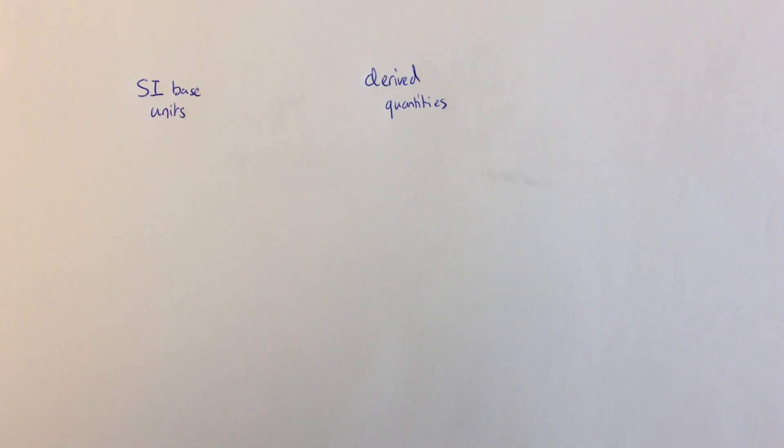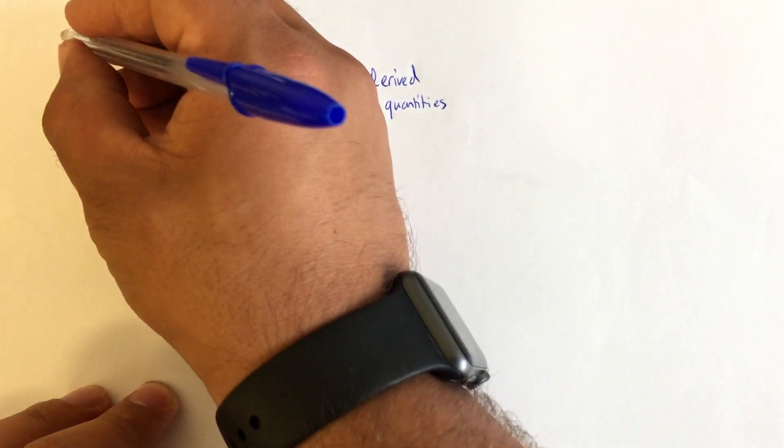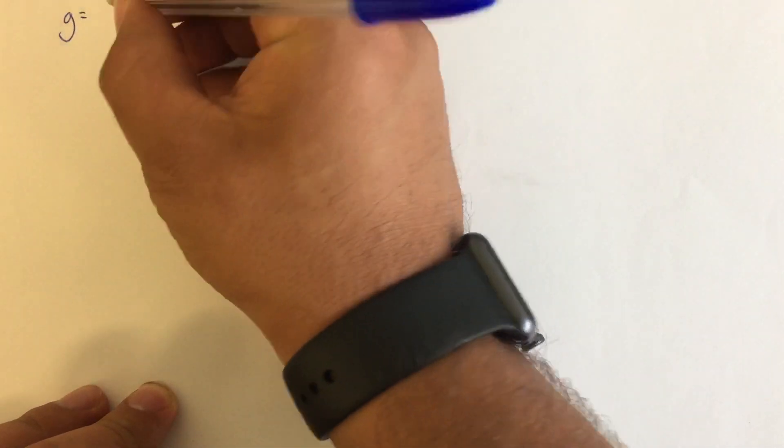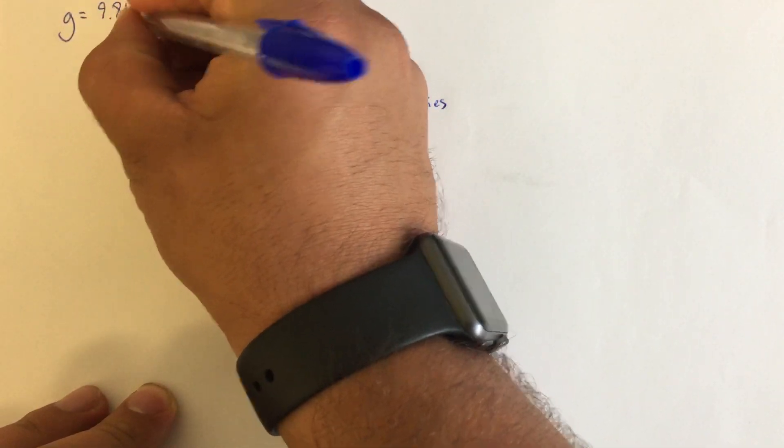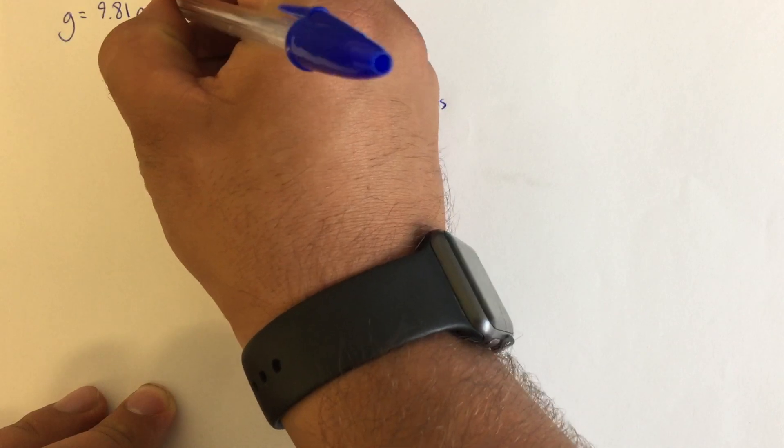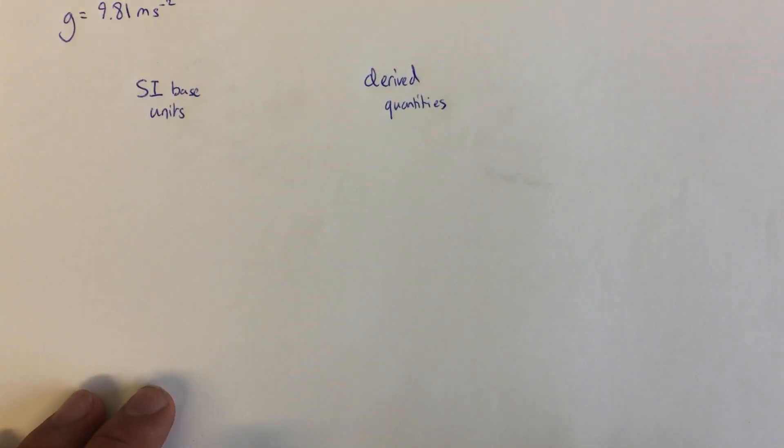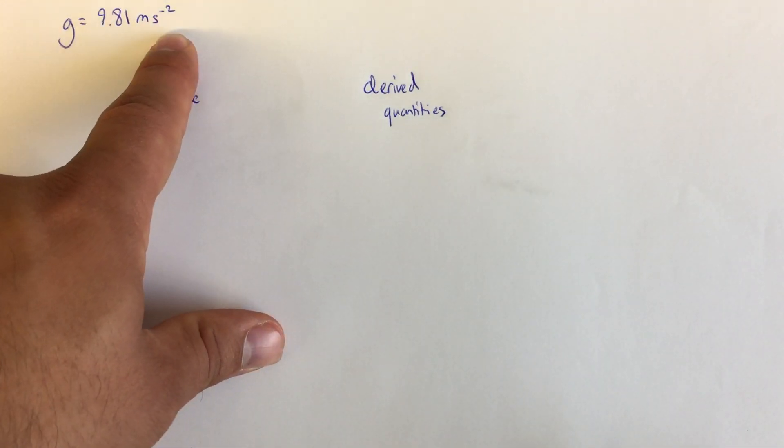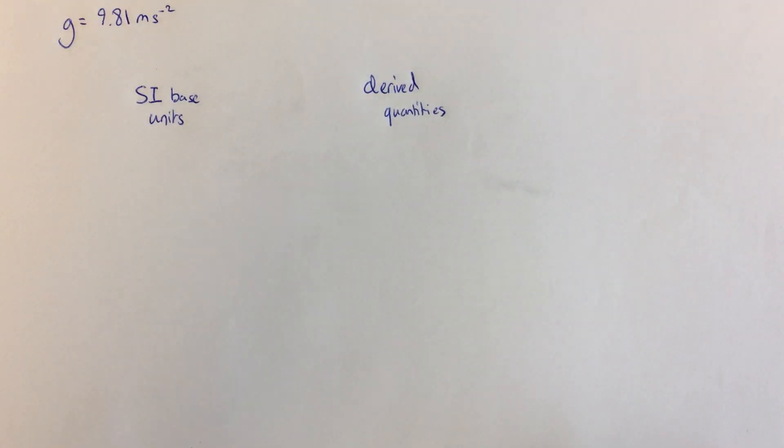You should know that a physical quantity is anything that contains both a numerical value and a unit. A really simple example would be acceleration due to gravity, which on Earth is always 9.81 meters per second squared. This is a physical quantity because it has both a number and a unit, and we can measure it.